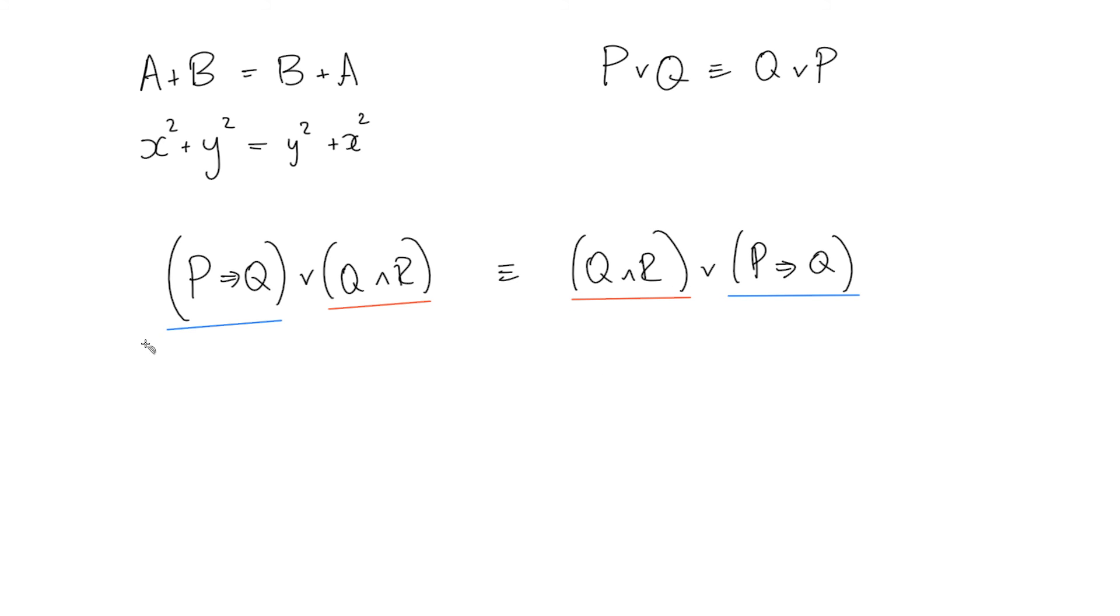then because this is an application of this rule here, p or q is equivalent to q or p, I know automatically that these are logically equivalent without drawing a truth table, because it's an application of this more general rule that the order of the inputs to an or operation don't matter.